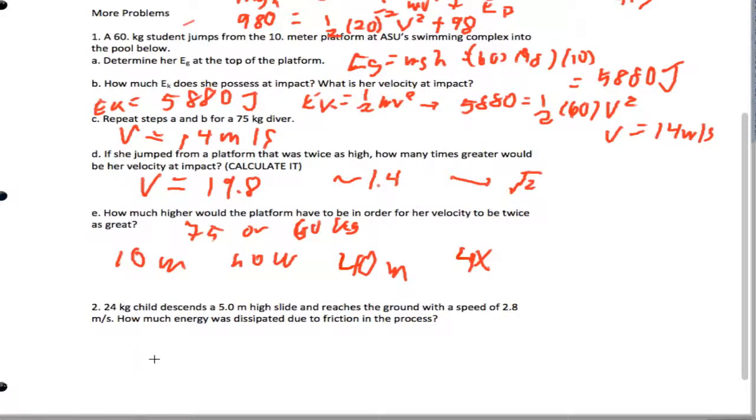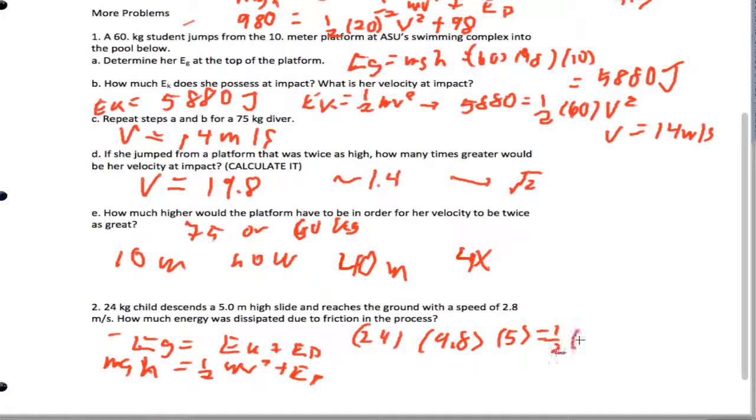And finally, number two, if a 24 kilogram child descends and has a speed at the end, we don't know how much energy was dissipated, so we're going to end up getting EG equals EK plus E dissipated. So that's MGH equals 1/2 mv squared plus E dissipated. And so we're going to end up getting 24 times 9.8 times 5 equals 1/2 times 24 times 2.8 squared plus ED.